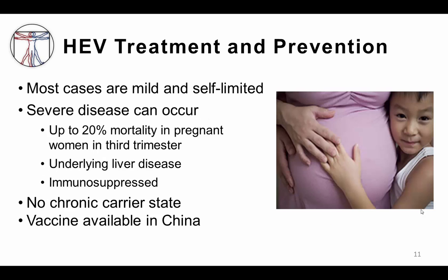Hepatitis E infected persons exhibit a wide clinical spectrum ranging from asymptomatic infection through acute fulminant hepatitis. The ratio of symptomatic to asymptomatic infection has not been well determined and may vary based on viral genotype and epidemiologic setting. Importantly, severe disease is more likely to occur in pregnant women, who have been found to have up to a 20% mortality when infected, particularly in the third trimester. Underlying liver disease, immunocompromised state, and refugee status have also been associated with poor outcomes.